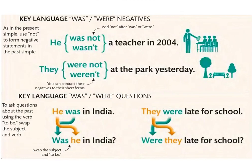They were not at the park yesterday — they weren't at the park yesterday. You can use the contracted form: weren't / wasn't. For questions, we swap the subject and the verb to be: He was in India → Was he in India? They were late for school → Were they late for school?